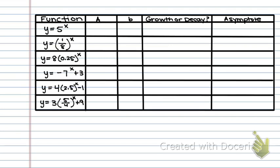I'm going to do examples 1 and 3 with you, and then I'm going to let you pause the video and try a couple of examples on your own. For the first example, it's asking you what is A, what is B, is it growth or decay, and where is the asymptote? A and B are two separate numbers, but if I look here, I only have one number. So the question is, does that number represent A or does that number represent B?